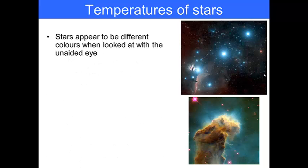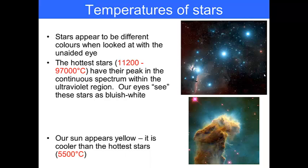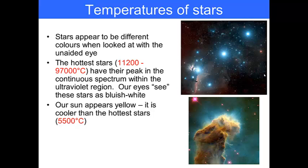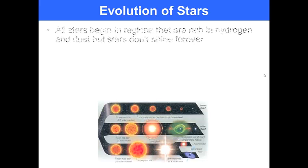The temperature of stars: stars appear to be different colors when looked at with the unaided eye and this is because of their temperature. The hottest stars somewhere between 112,000 to 97,000 degrees Celsius have their peak in the ultraviolet radiation. Our eyes see these stars as white or bluish white. Our sun appears yellow because it is cooler at about 5,500 degrees Celsius. Even cooler stars appear to be red in the night sky at about 2,900 degrees Celsius.